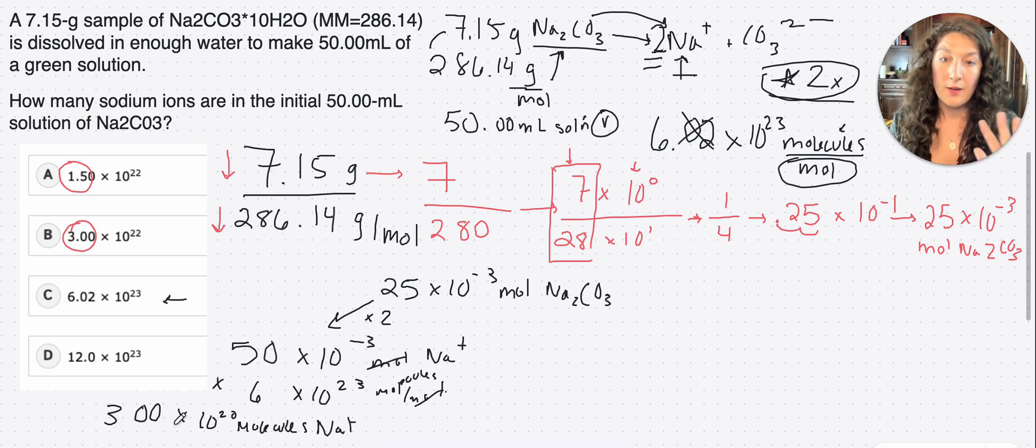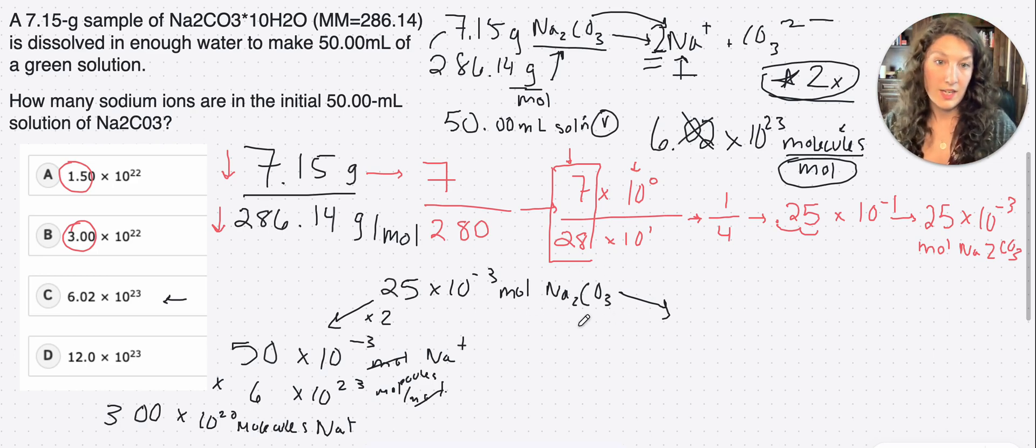All right, now we'll pause there. I'll tell you how we do with this at the end. I want to show you the other way we could do this math. The other way is to do Avogadro's number first, right? And so we could first find the molecules of Na2CO3 and then do the molar conversion, all right?